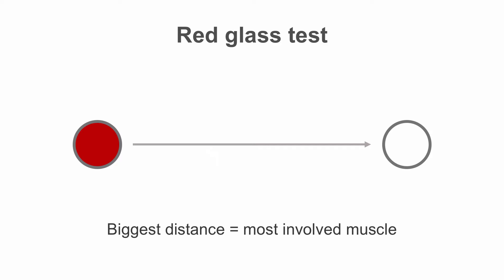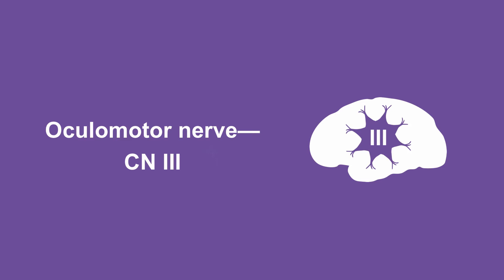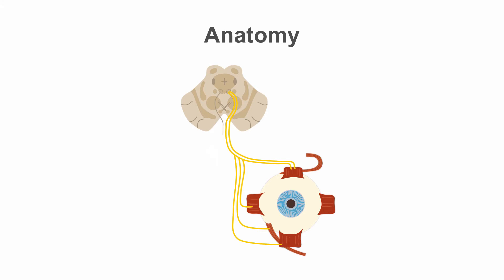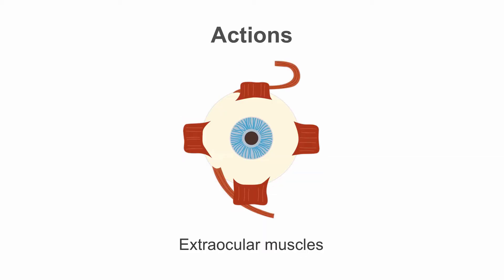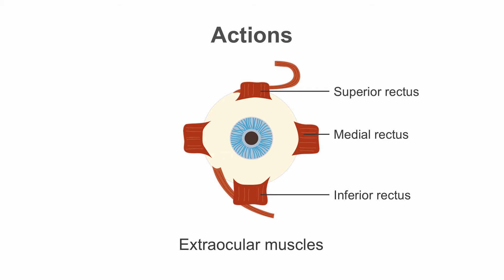Now let's take a closer look at the oculomotor nerve, cranial nerve 3. The nucleus of cranial nerve 3 is located in the midbrain. It exits from the midbrain ventrally, between the cerebral peduncles. It passes through the cavernous sinus along with cranial nerves 4, 5, and 6, then exits into the orbit. Cranial nerve 3 innervates four of the six extraocular muscles: the superior, inferior, and medial rectus, and the inferior oblique.